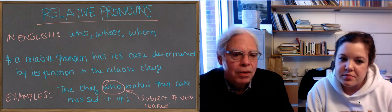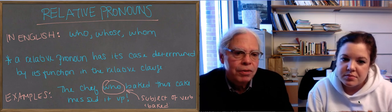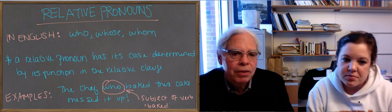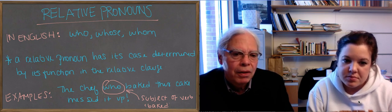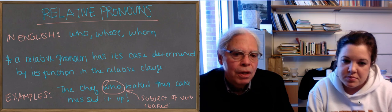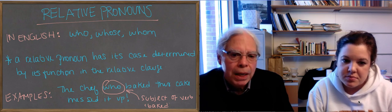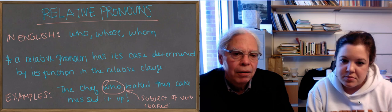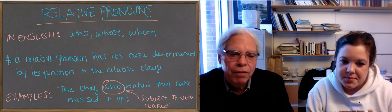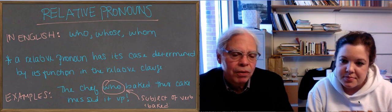So our example sentence is, the chef who baked this cake messed it up. In that sentence, who is the subject of the verb baked. It refers to the chef, who happens to be the subject of the sentence.